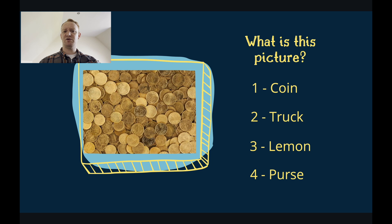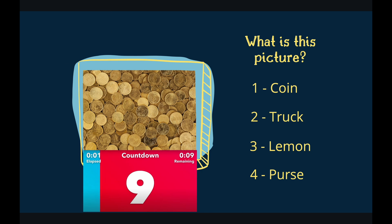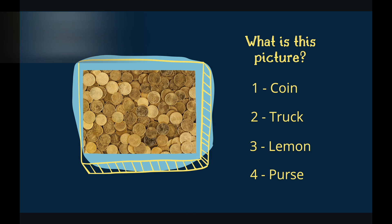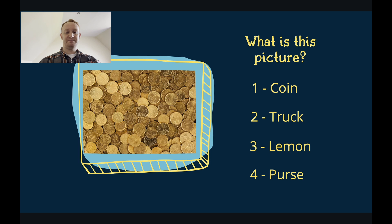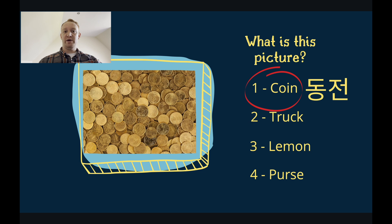What is this a picture of? Is it coins? Is it a truck? Is it lemons? Or is it a purse? You have 10 seconds. It was coins. These coins are gold. These coins are euros. Euro coins are used in countries within the European Union. That is the end of the questions.